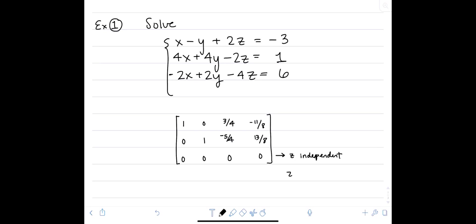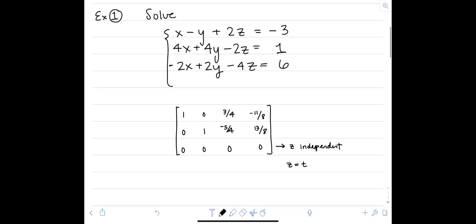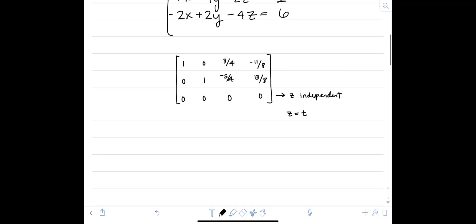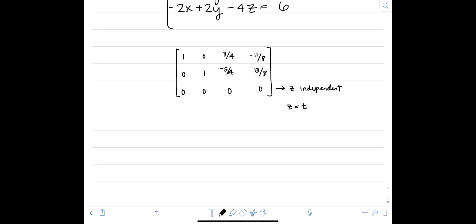We're going to parametrize the solution set. Basically, what's happened is that our three planes no longer intersect at a single point. In this case, it looks like because we have one independent variable, they're going to intersect on a line. So let's work on explaining what x and y are in terms of this parameter t. Looking at our first equation, we have that x plus 3 quarters z is negative 11 over 8. So we solve for x, and then because z is our parameter t, x is now negative 11 over 8 minus 3 quarters t.